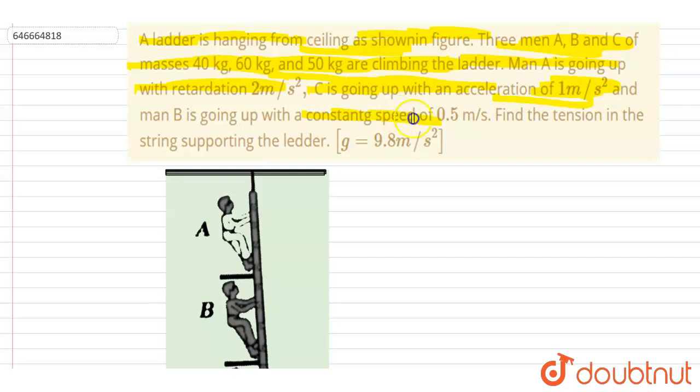Man B is going up with a constant velocity of 0.5 m/s. Find the tension in the string supporting the ladder. So we want the tension in this string.